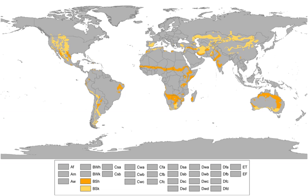Cold semiarid climates at higher latitudes tend to have dry winters and wetter summers, while cold semiarid climates at lower latitudes tend to have precipitation patterns more akin to subtropical climates, with dry summers, relatively wet winters, and even wetter springs and autumns. Cold semiarid climates are most commonly found in Asia and North America, but can also be found in Northern Africa, South Africa, Europe, sections of South America, and sections of interior Southern Australia and New Zealand.